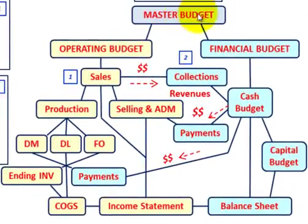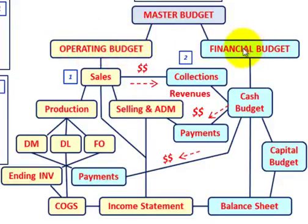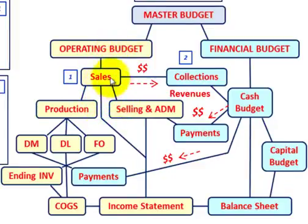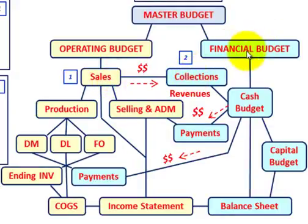So where does the sales budget fit in under our various budgets? The company starts out with a master budget, which is split up between the operating budget and the financial budget. Under our operating budget, the first budget we have to develop is the sales budget, because all our other operating budgets depend on the sales budget for their numbers. Along with our sales budget, we also have our revenues or collections from sales, and those fall under the financial budget.